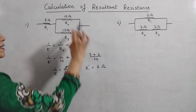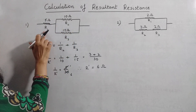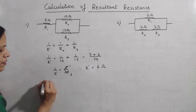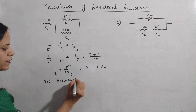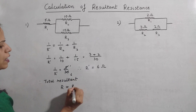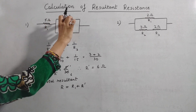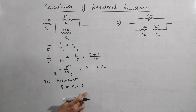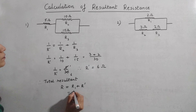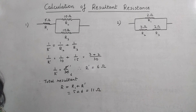This is the resultant of R2 and R3. Now, this combination is in series with R1. Therefore, the total resultant R will be equal to R1 plus R', since R1 and R' are in series and the formula for series is the sum of individual resistances. This sums up to be 5 plus 6, which is 11 ohms.